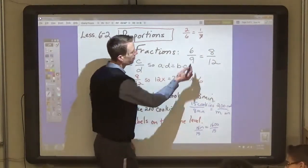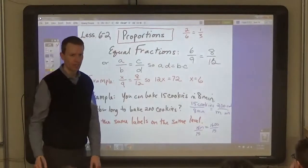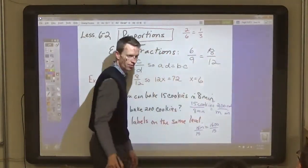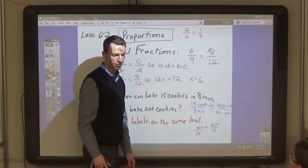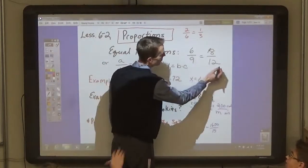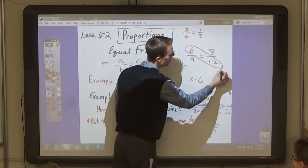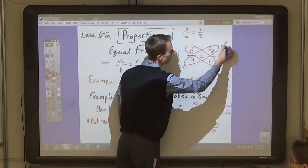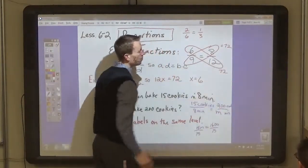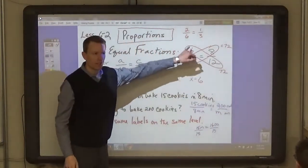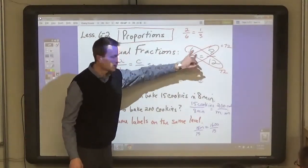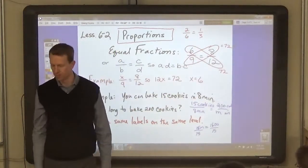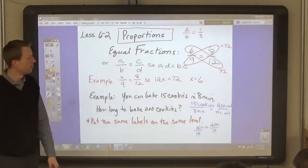So, in other words, 6 times 12 is equal to 9 times 8. What is 6 times 12? 72. Yep, 6 times 12 is 72, and 9 times 8 is 72. Now, if the cross products are equal, then you have a true proportion. It's called a true proportion.